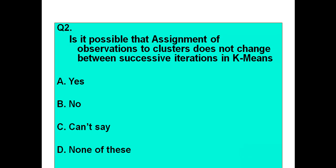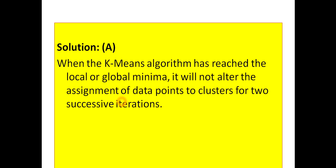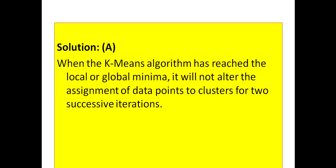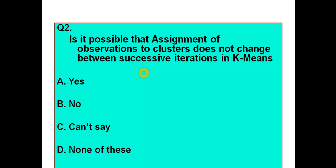The question is asking about assignment of observations to clusters — whether it will change between successive iterations in k-means or not. The answer is option A, yes. Assignment of observations to clusters does not change between successive iterations in k-means because when the k-means algorithm has reached the local or global minima it will not alter the assignment of data points to clusters for two successive iterations. So the data points are not going to move.